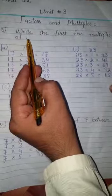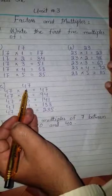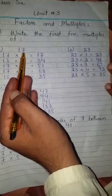Question number 3: Write the first 5 multiples of 17, 23 and 47. For these specific numbers, we have 17, 5 times.